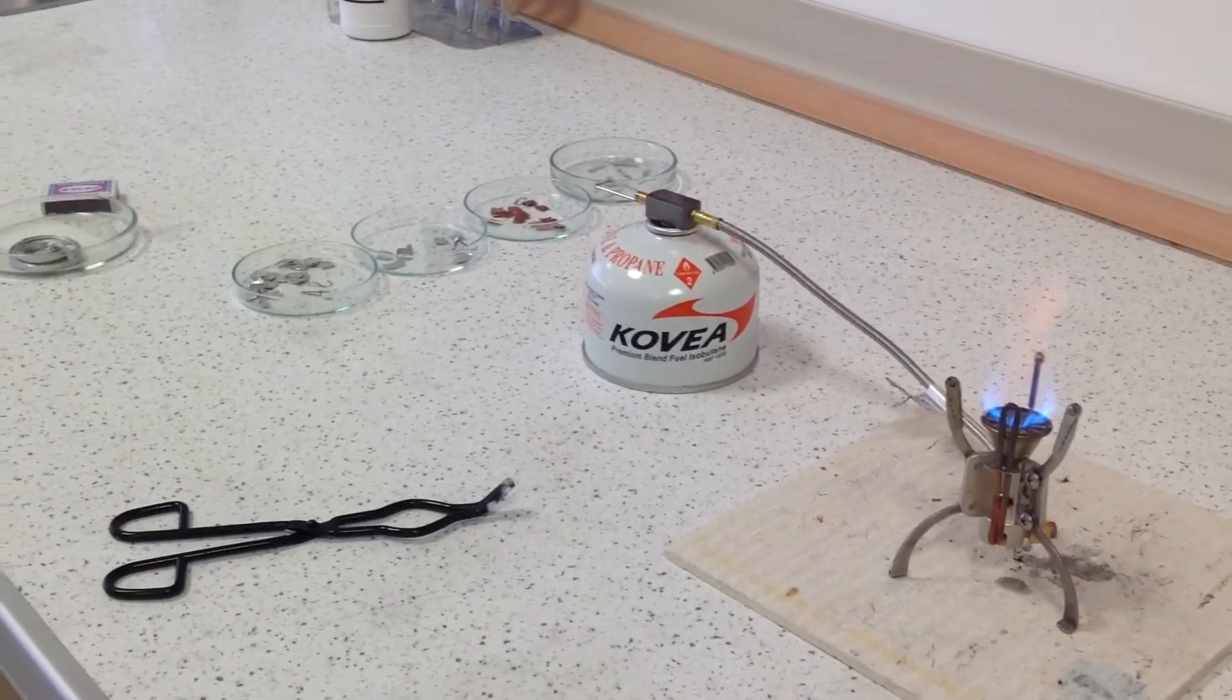This is our science laboratory. This is where we learn about science. Our video is about chemical reactions. We're using Bunsen burners and four metals: aluminum, copper, magnesium, and zinc.